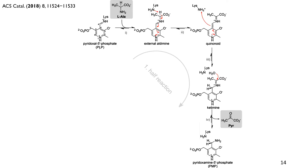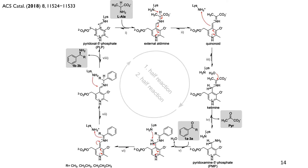In the second half-reaction, we go the other way around, introducing our ketone as the amine acceptor and releasing the amine product in the end. This mechanism, especially for the S-specific transaminase, is similar in all transaminases.